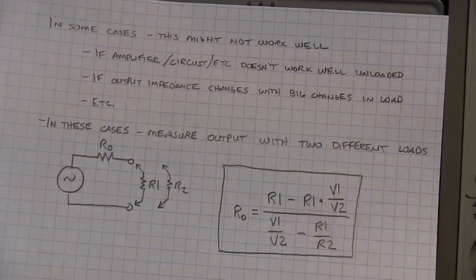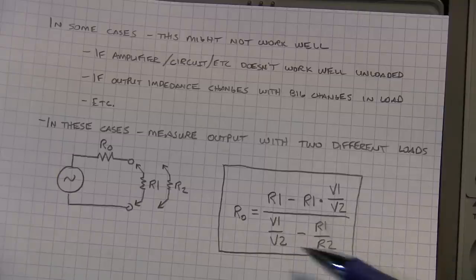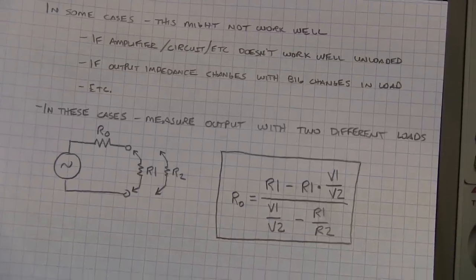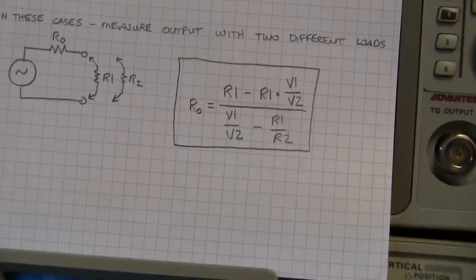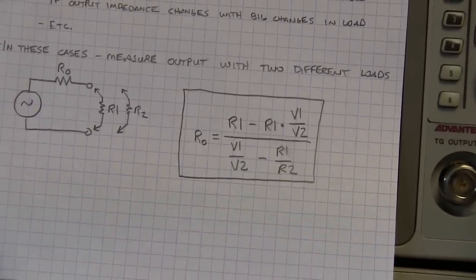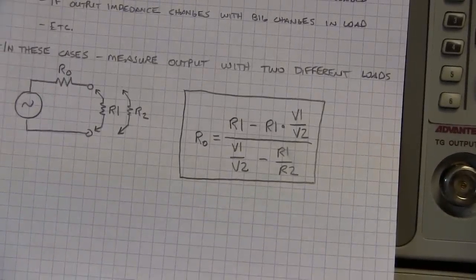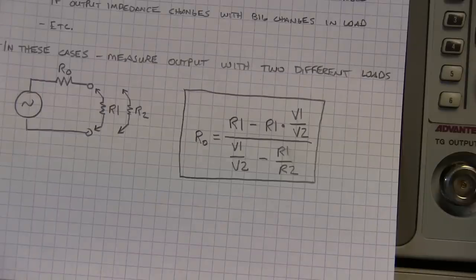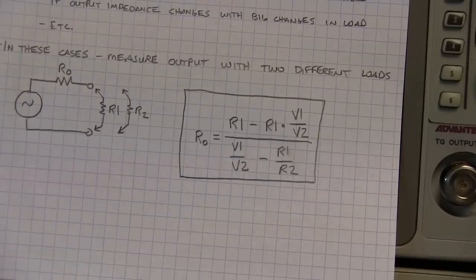And then once you've got that you can calculate the output impedance with this formula here. Let me send it better on the screen here. Take a look at that and you might be able to rearrange this in other ways but this formula is reasonably easy enough to solve with a calculator. So let's, even though we already know the output impedance of my little homebrew generator, let's try applying two different loads and seeing if we can calculate the load impedance this way.